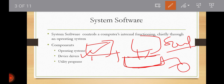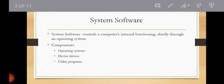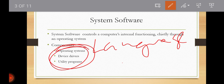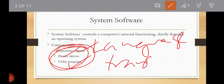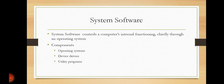There is also a fourth component called a language translator, but basically we have three main components: the operating system, device drivers, and utility programs. Language translators will be described in other videos. System software acts as an interface between the user, the application software, and the computer hardware.